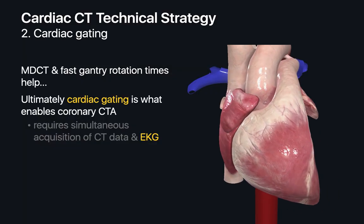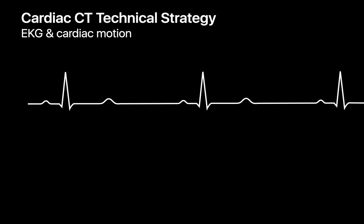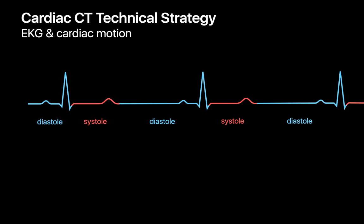With cardiac gating, we record the patient's EKG at the same time we acquire their cardiac CT scan. The electrical signals that directly correspond to how the heart contracts over time are documented in a patient's EKG. During each heartbeat, there's a P wave corresponding to the contraction of both atria, followed by a QRS complex corresponding to the contraction of both ventricles, followed by a T wave corresponding to the relaxation of both ventricles. The RR interval corresponds to the duration of one complete cardiac cycle, allowing us to know when during our CT scan acquisition the heart was in diastole and when it was in systole.